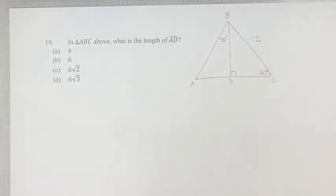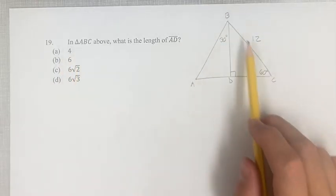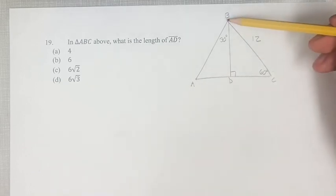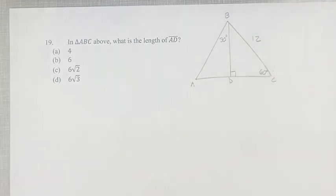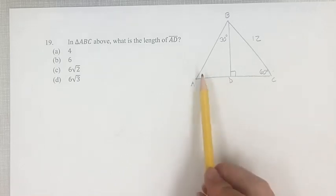Hello, and welcome back to another video. This problem, we're given triangle ABC, and we are given that side BC is equal to 12. We are asked, what is the length of AD?